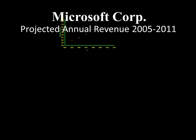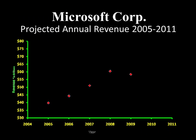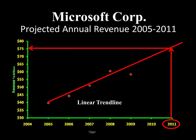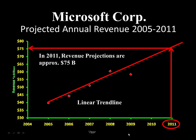Let's play through it all again. That's what your audience sees as soon as you click into the slide — then it pauses and waits for you to click to make the trendline appear. We talk about the linear trendline, click again, talk about the forecast, and then the finale comes up: in 2011, revenue projections are approximately 75 billion. That concludes how to animate a graph with a trendline in PowerPoint. Thank you for your time.